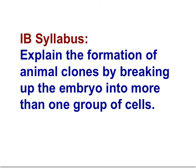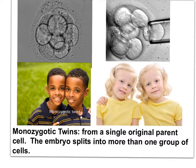Animal clones can be formed by breaking up the embryo into more than one group of cells. Identical twins are monozygotic — derived from a single zygote that very early in development split into two genetically identical groups of cells, each developing asexually into clones. The original embryo broke apart for reasons scientists do not fully understand. A cell pulled off the embryo as a separate cell might grow into an individual genetically identical to the one developing from the remaining group — all through asexual cell division.